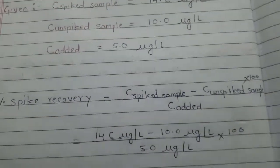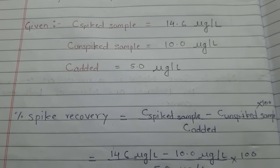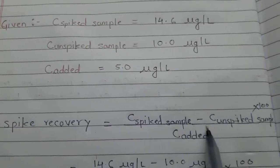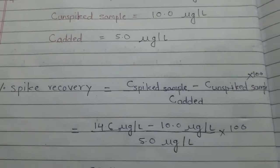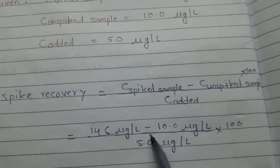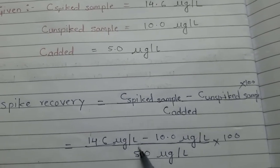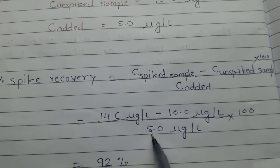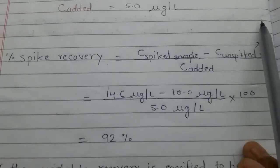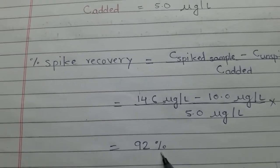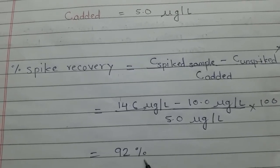For finding out the percent spike recovery we use this formula: percent spike recovery equals concentration of spiked sample minus concentration of unspiked sample, divided by concentration added, into 100. Putting in the values: (14.6 − 10) / 5 × 100. After calculating, we find the answer is 92 percent. So here we have got the percent spike recovery which is 92 percent.